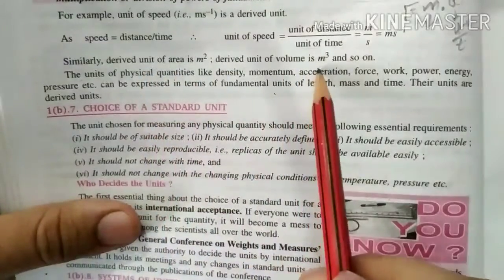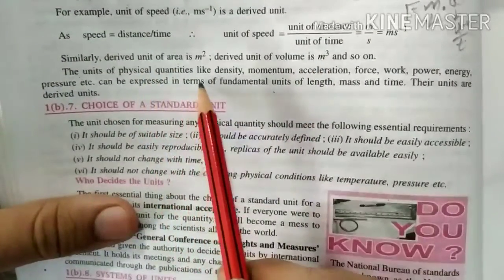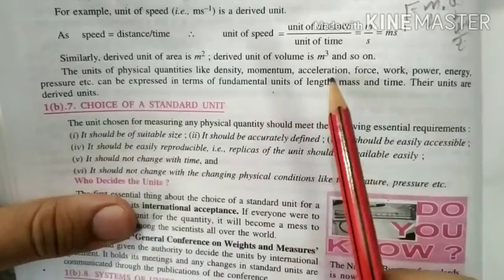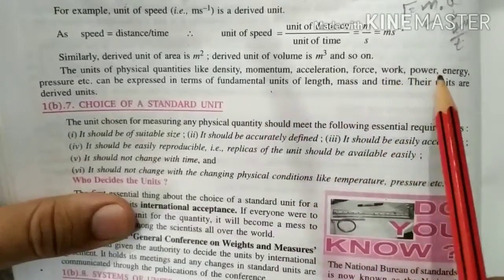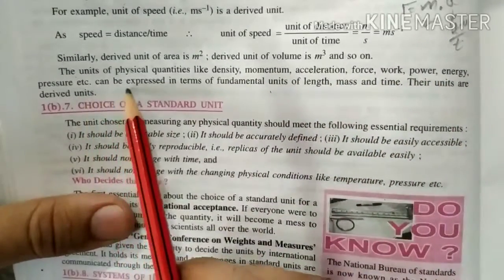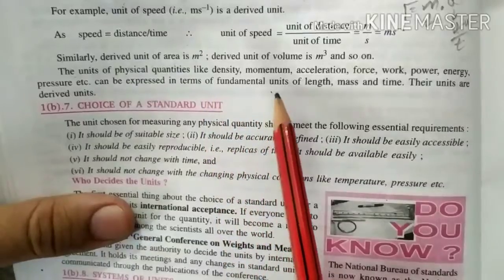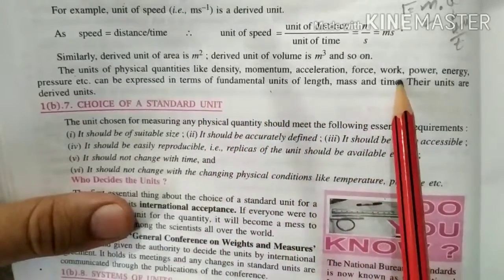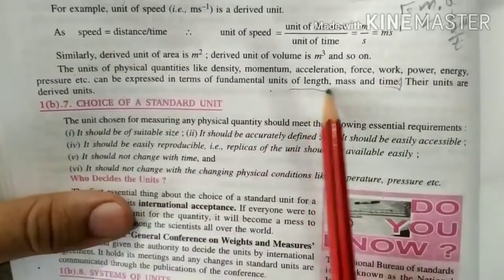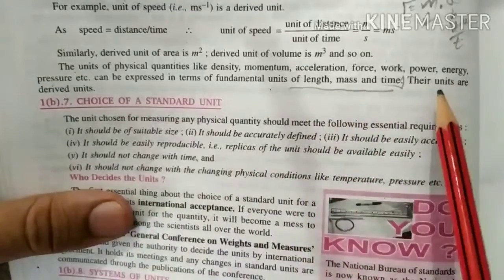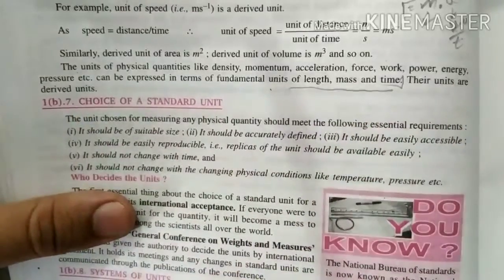Area is a derived unit, volume is a derived unit. The units of physical quantities like density, momentum, acceleration, force, work, power, energy, pressure etc. can be expressed in terms of the fundamental units of length, mass and time. These are the derived units.